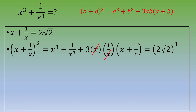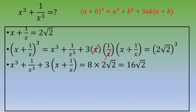We can simplify by canceling x times (1 over x) to 1, giving x cubed plus 1 over x cubed plus 3 times (x plus 1 over x) equals (2 square root of 2) cubed. Now, (2 square root of 2) cubed equals 2 cubed times (square root of 2) cubed, which equals 8 times 2 square root of 2, giving 16 square root of 2.